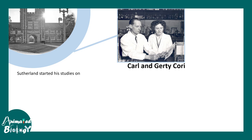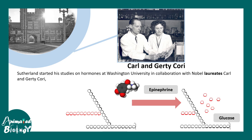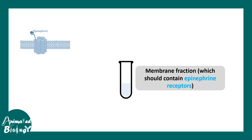Sutherland was working in the lab of Carl and Gerty Cori — the couple who discovered the Cori cycle, famous in biochemistry. In their lab, Sutherland showed that epinephrine has the activity of breaking down glycogen into glucose, triggering the glycogenolysis pathway. He took mouse liver, ground it, and created two fractions: a cytoplasmic fraction containing glycogen phosphorylase, and a membrane fraction containing the receptor for epinephrine.